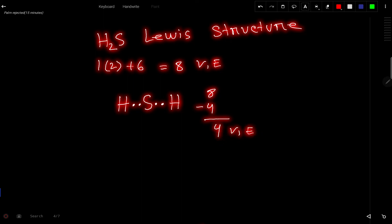So, we have four valence electrons left. These four valence electrons will be used to satisfy the octet for this sulfur. So, used four, right? So, already we have used all the valence electrons.